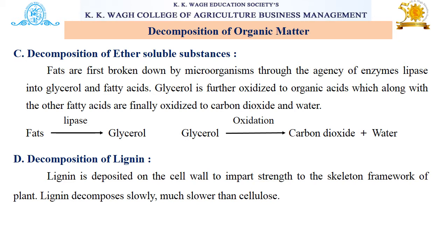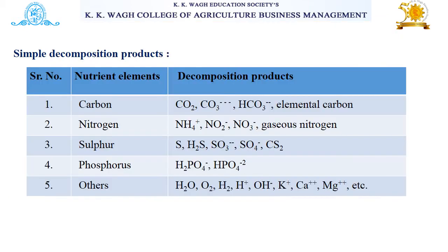The fourth step under decomposition of organic matter is decomposition of lignin. Lignin is deposited on the cell wall to impart strength to the skeletal framework of plants. Lignin also decomposes slowly — much slower than cellulose.